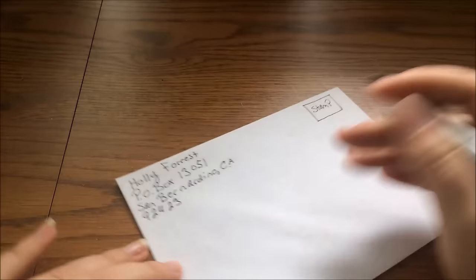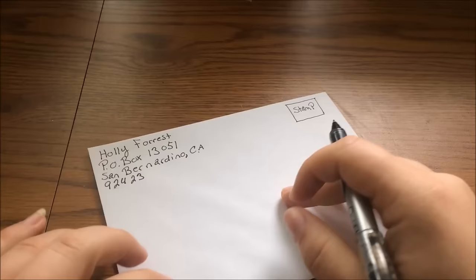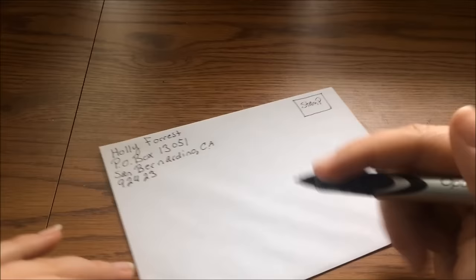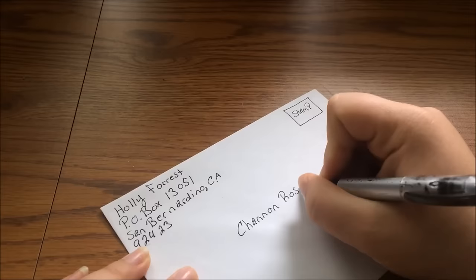Now the next one is Shannon Rose. We're going to say she's the one receiving the letter. So whoever you're sending the letter to needs to go here in the middle space. And it's kind of the same kind of blocky setup for writing out their address. So it'd be Shannon Rose.